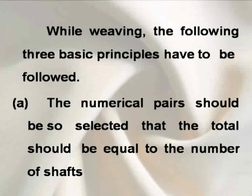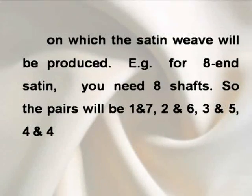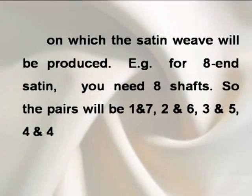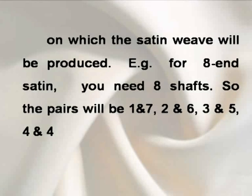A. The numerical pairs should be so selected that the total should be equal to the number of shafts on which the satin weave will be produced. For example, for eight end satin, you need eight shafts. So the pairs will be one and seven, two and six, three and five, four and four.